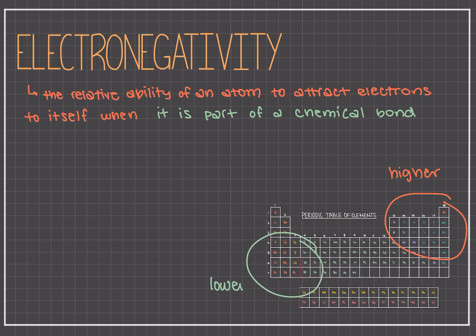Electronegativity also decreases going down a group. Conceptually, this is because the distance between the outer shell, or the valence shell, and the nucleus containing the protons is increasing. And the protons are what attract these electrons. So as the distance between the outer shell and the nucleus increases, the level of pull from the protons also decreases, hence the atom's electronegativity is decreasing.